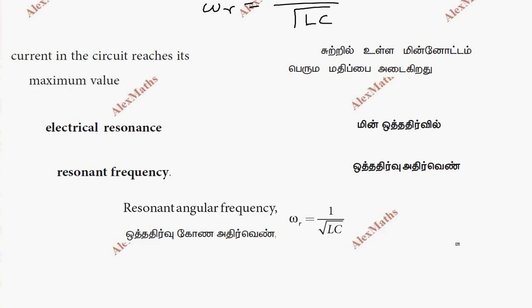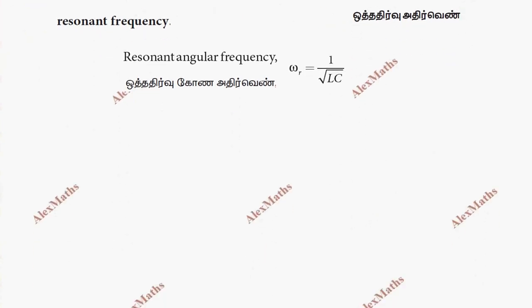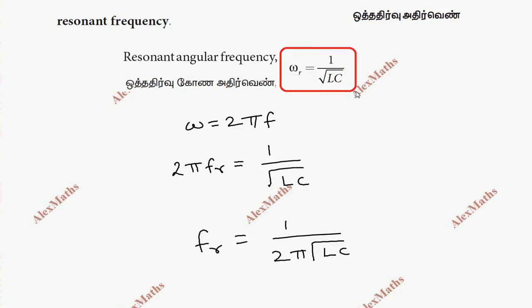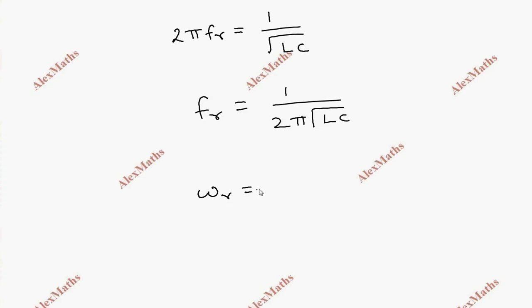This omega r is an angular frequency. We know omega equals 2 pi f, so the resonant frequency condition gives us 2 pi f equal to 1 by root LC.